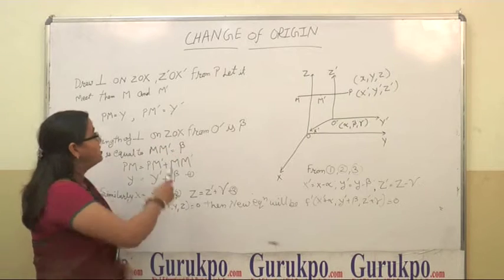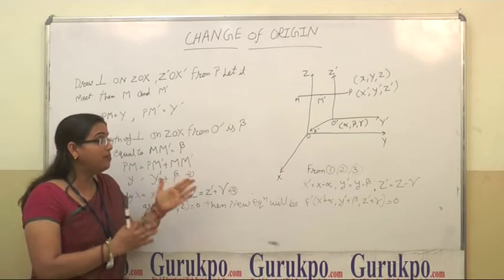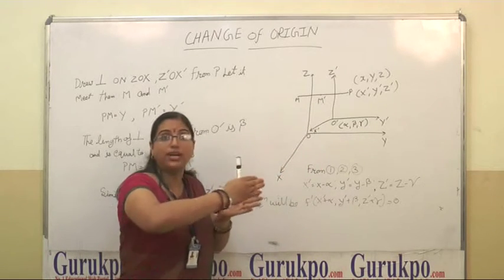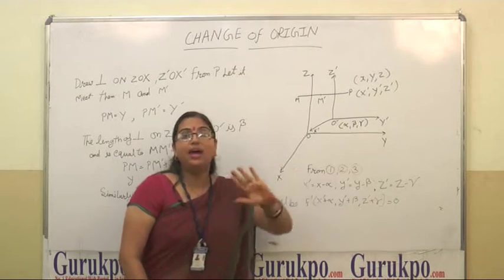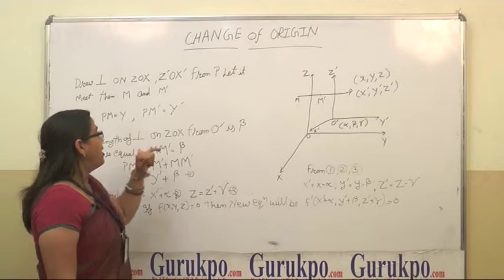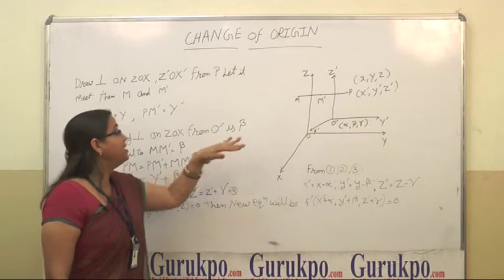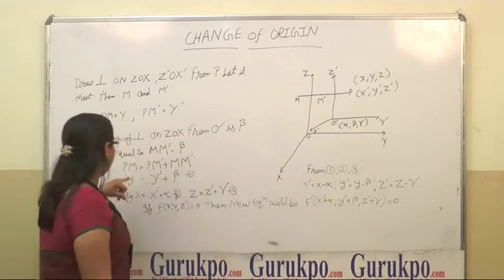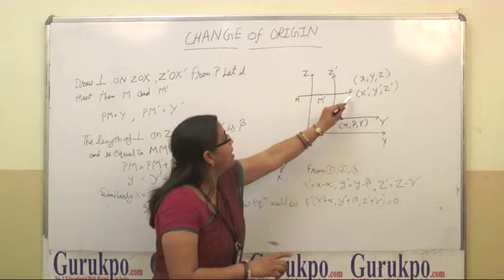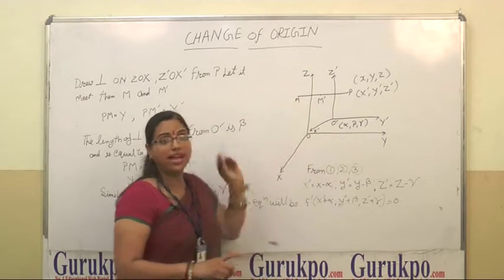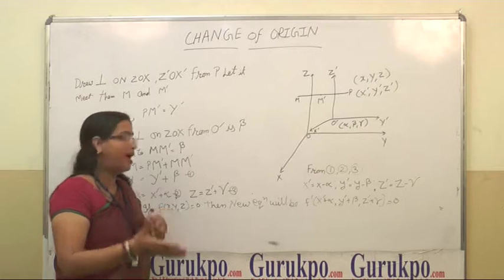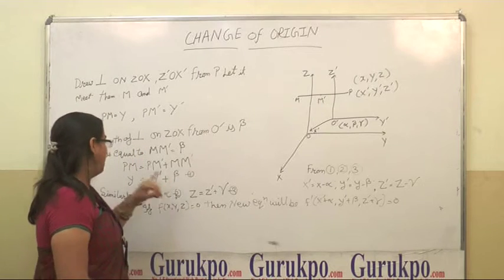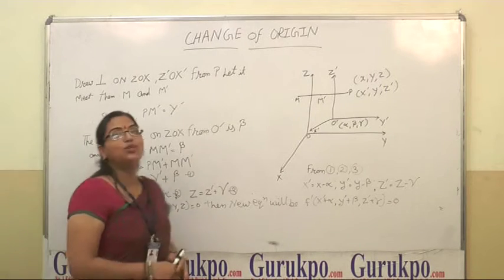The length of perpendicular on Z to X from O dash is, we measure that, here we assume that the coordinates of O dash when we shift it from O to O dash will be alpha, beta and gamma. Then the length of the perpendicular of Z to X from O dash is beta and is equal to MM dash. Now we have to find the length, then length will be PM, here PM is equal to PM dash plus MM dash. In this equation, we have to put the values, PM is equal to Y and PM dash is equal to Y dash and MM dash is equal to beta. So the equation will be Y is equal to Y dash plus beta.